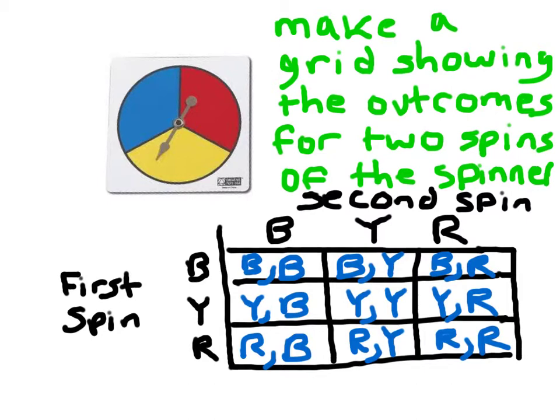So we can ask what's the probability or the chance that it would be the same color. And then so in that case, that's three out of the whole thing, which is nine, which would be three ninths. So we can use this grid for different purposes.